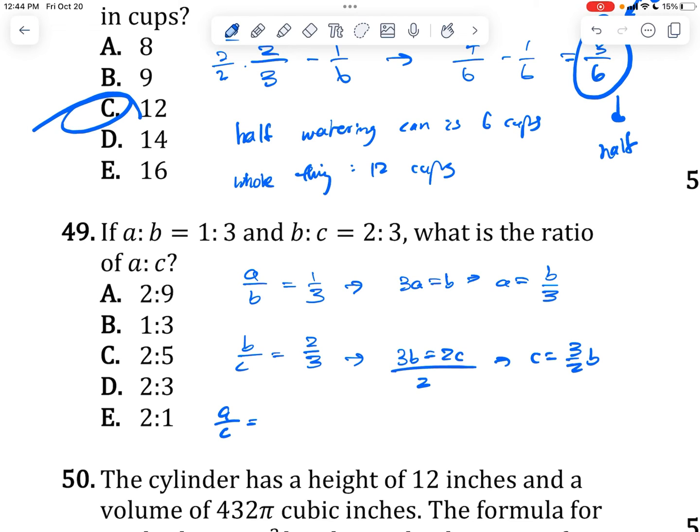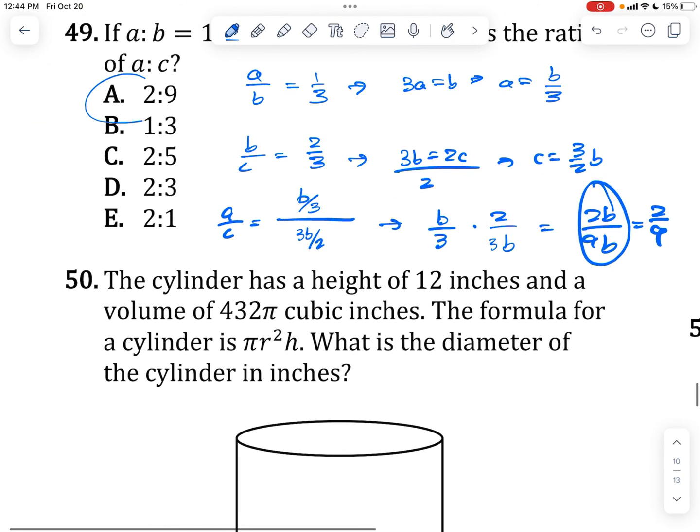Now if we divide a over c, we end up getting b over 3 divided by 3 over 2b. Now dividing fractions is the same thing as multiplying by the reciprocal. And I'll just rewrite this as 3b over 2. So let's just multiply by the reciprocal. b over 3 times 2 over 3b equals 2b over 9b, which is equal to 2 over 9. And this is the same thing that I was talking about before. The b's cancel out. Same thing that they did in the other way of doing it. The b's cancel out. You get the same thing either way.